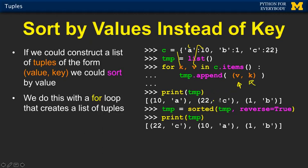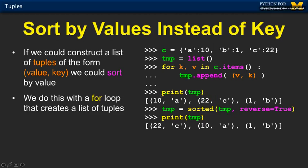So if we print this out, they're not particularly sorted at this point, but we have the values and keys flipped: value-key, value-key, value-key. Now what we can do is this is now just a list — a list of tuples — and if we tell it to be sorted, it's going to compare these things and sort, and when values match it will use the key as the next sorting criterion.